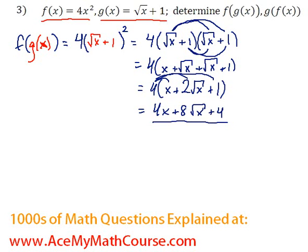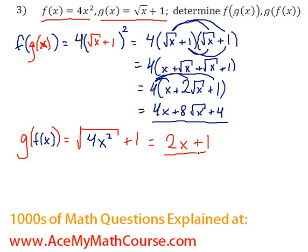Okay, now we can do g of f of x. Here we go. So the outside function, of course, is just the root plus 1, and here we just have 4x squared. Okay, so the square root of 4 is 2, and the square root of x squared is just x. So the answer is just 2x plus 1. And that's it.